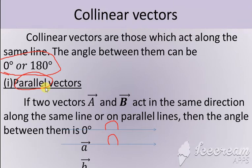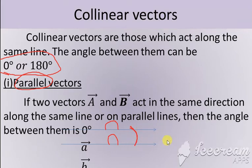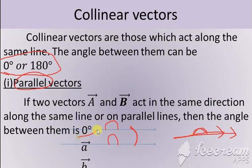Along collinear vectors, we have two types: parallel and anti-parallel. Parallel means they act in the same direction, so the angle made between them is 0°, because they are acting in the same direction — drawing one over the other — and so the angle made is 0°. If the angle made is 0°, then they are said to be parallel vectors.